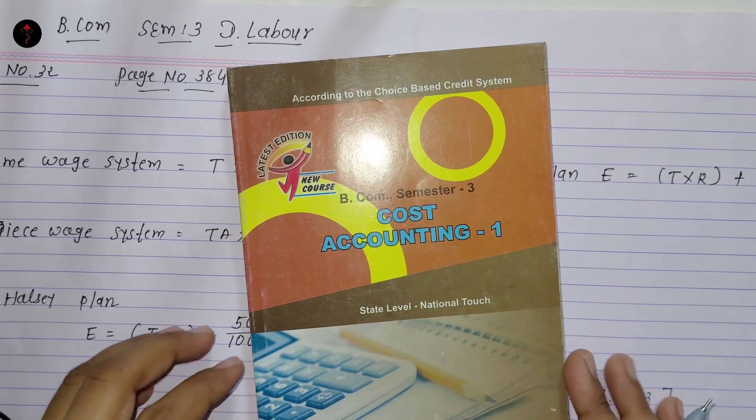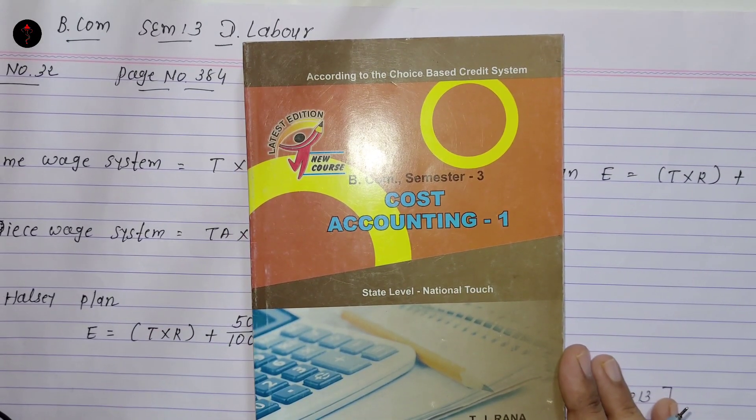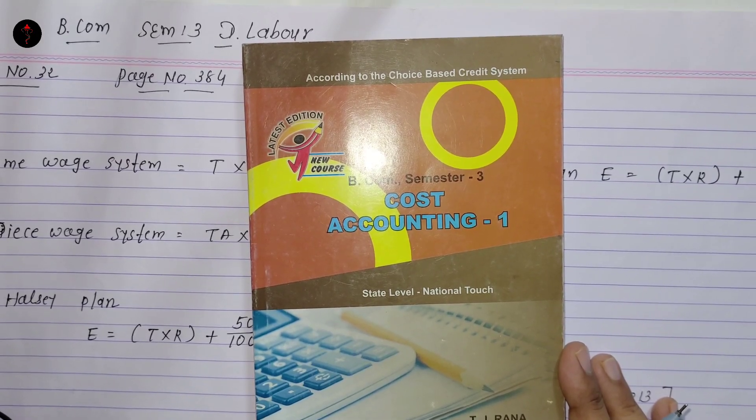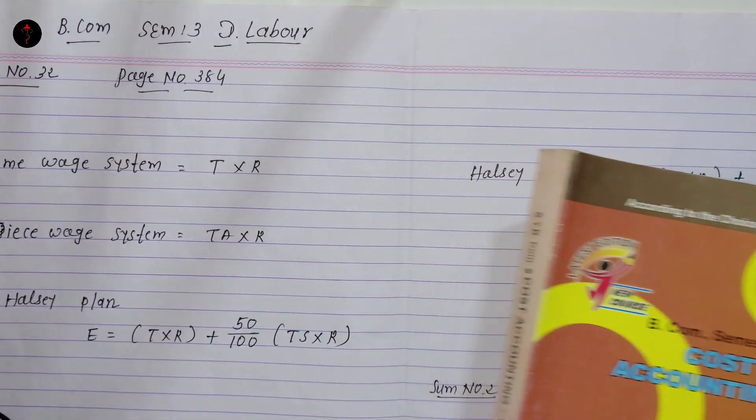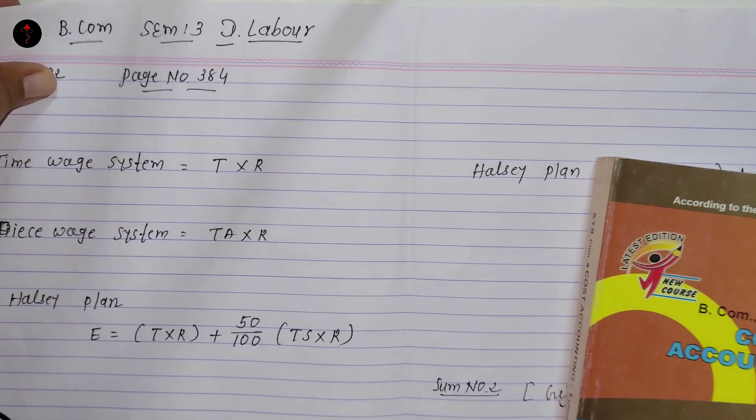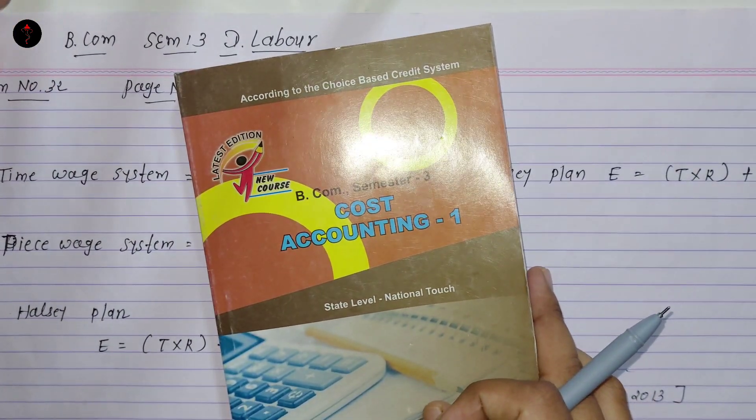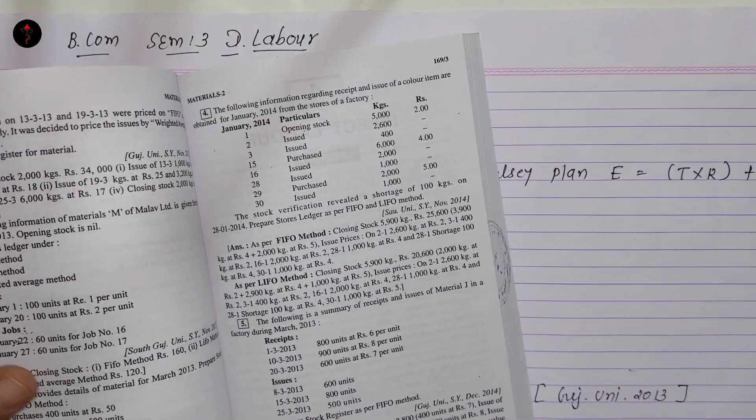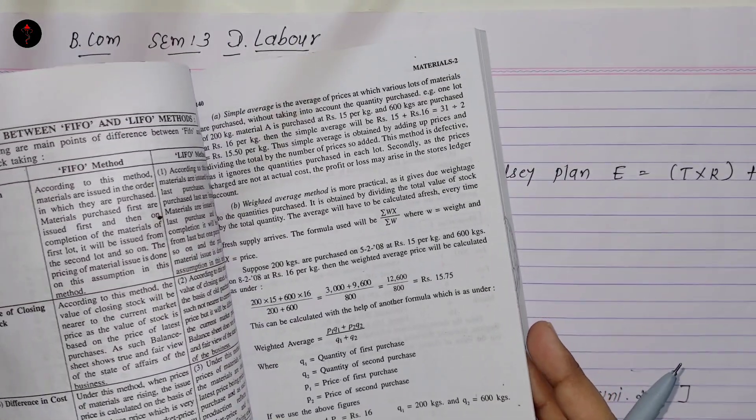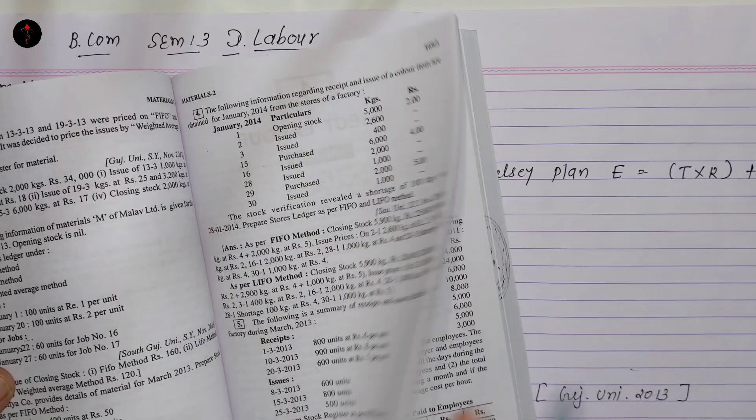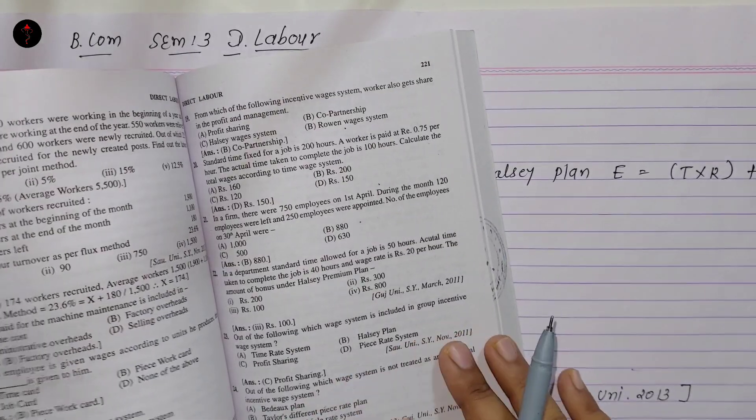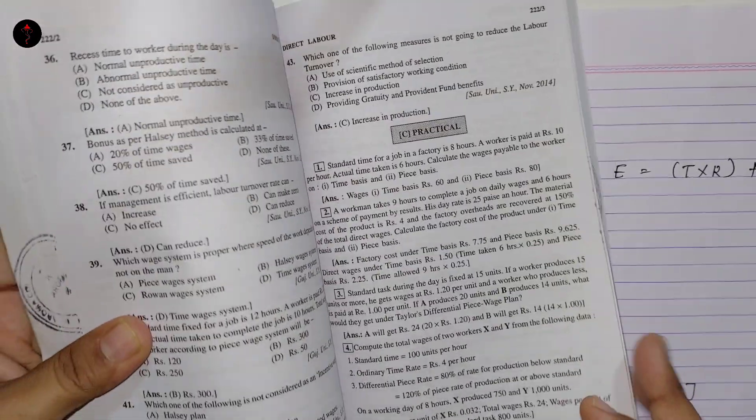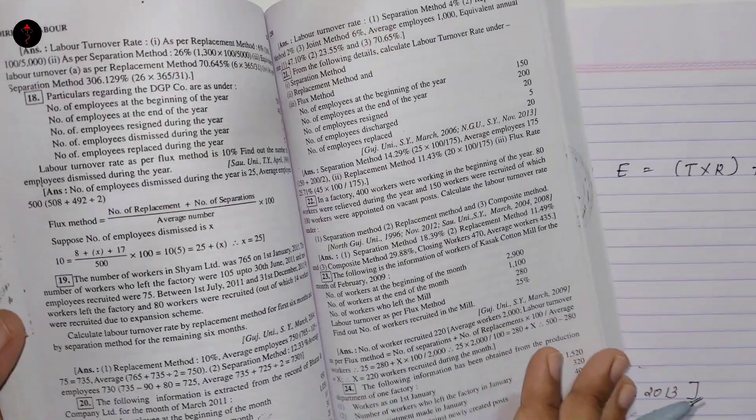Good morning students. This is B.Com Semester 3, Cost Accounting 1. In our last video, I gave you the syllabus and covered the Direct Labor chapter with formulas and explanations. Today we will discuss Direct Labor further. As I told you, Direct Labor is a very scoring chapter where you can get very good marks, so we should work hard on it.